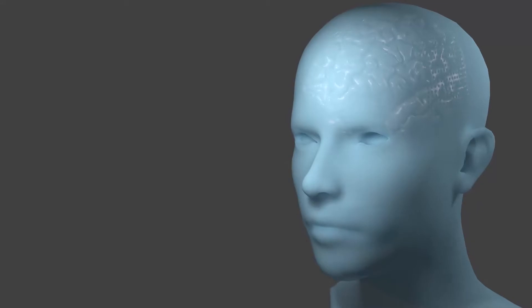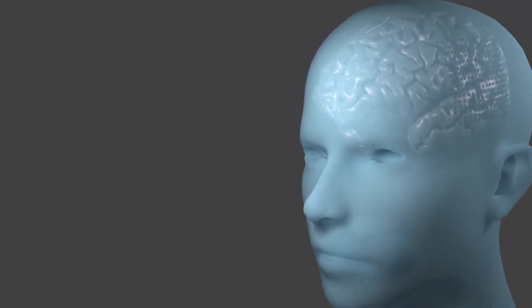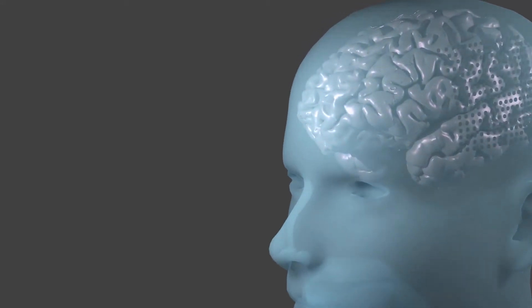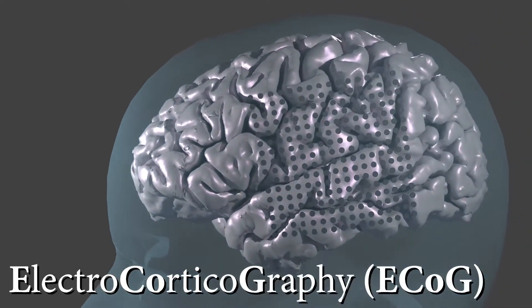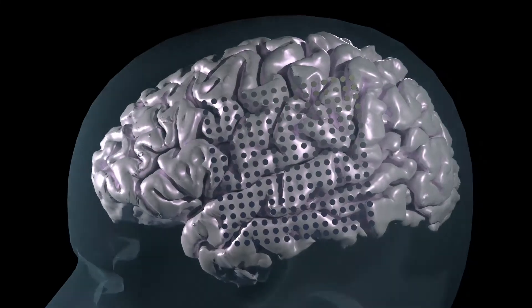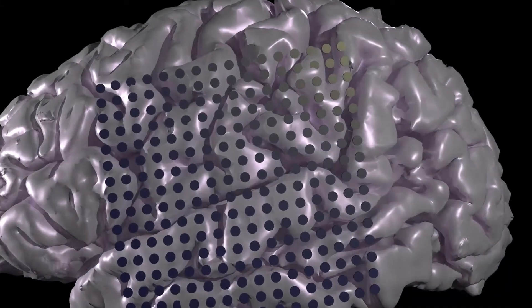But we still don't know that much about how the brain does this. To study this question, we asked 27 participants to listen to natural speech sounds while we recorded activity from the surface of their brains using a method called electrocorticography. This is a method where activity is recorded directly from the brain's surface as part of surgical treatment for epilepsy.